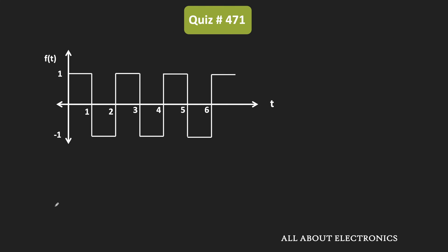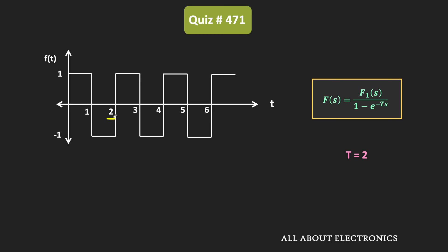For the given periodic signal f(t), its Laplace transform F(s) can be given by this expression. Here, capital T is the time period of this periodic waveform. In this case, as you can see, this time period T is equal to 2. And F1(s) is the Laplace transform of the first period of this periodic function.